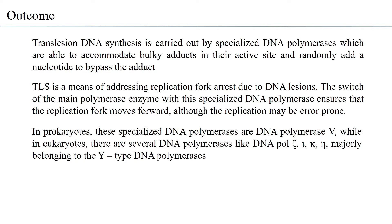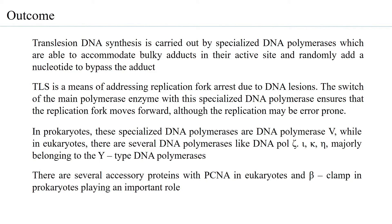In prokaryotes, the specialized DNA polymerases are DNA polymerase 5 and in certain cases DNA polymerase 2. In eukaryotes there are several DNA polymerases — pol zeta, pol iota, pol kappa, and pol eta — majorly belonging to the Y-type DNA polymerases. There are several accessory proteins, with PCNA in eukaryotes and the beta clamp in prokaryotes playing an important role.